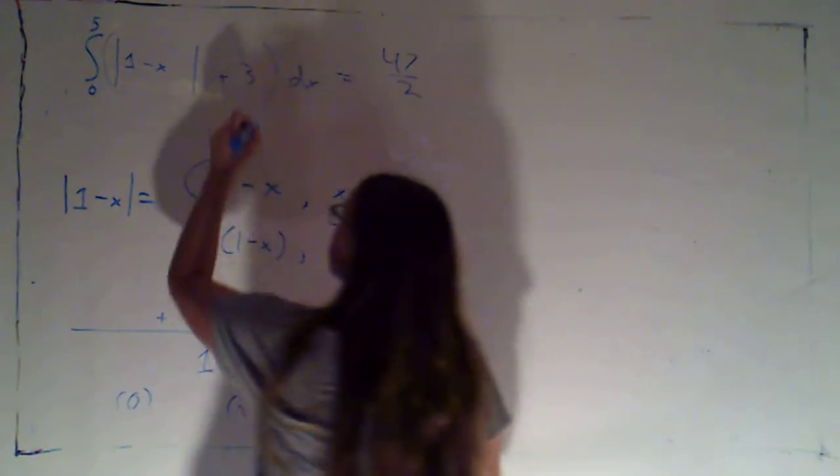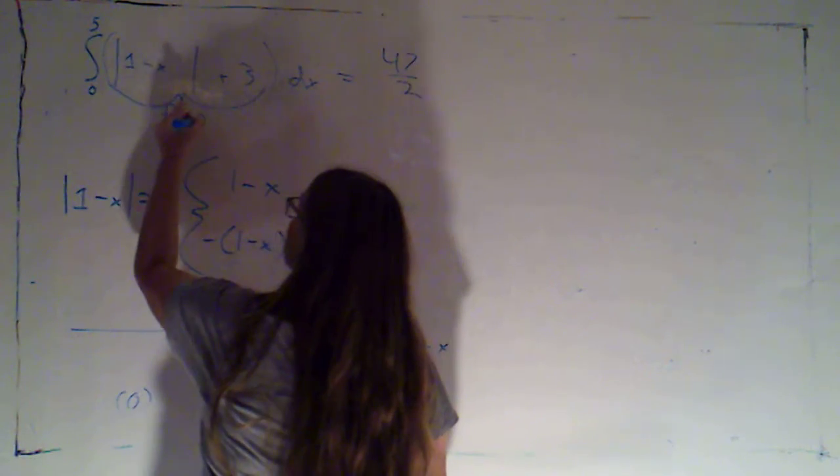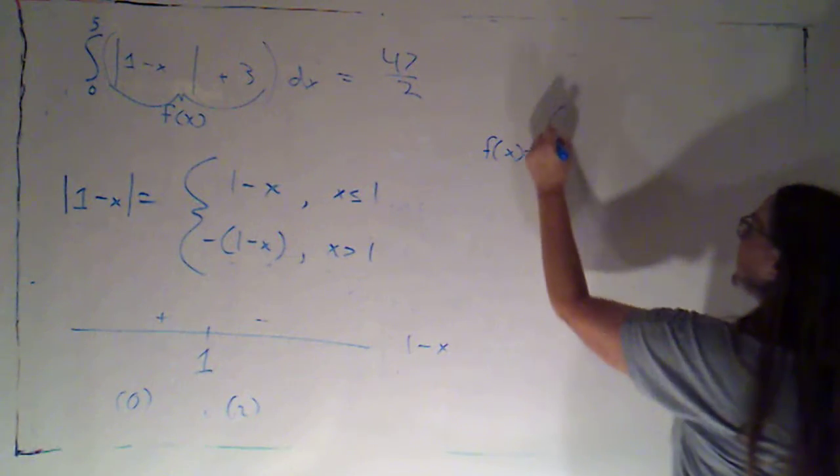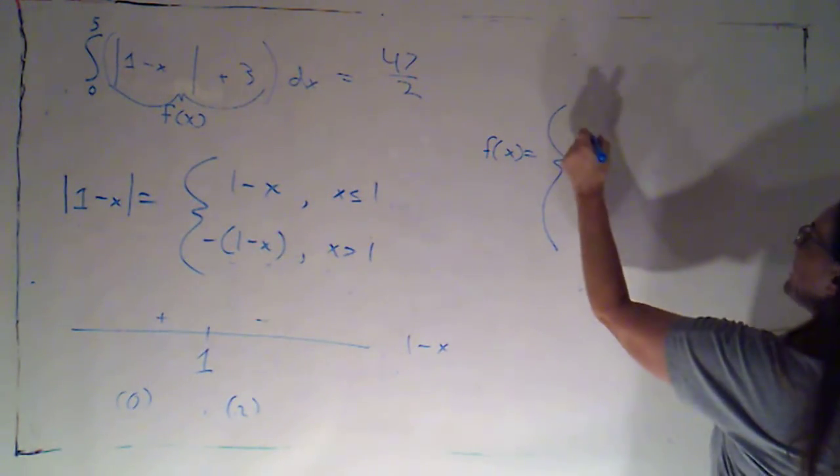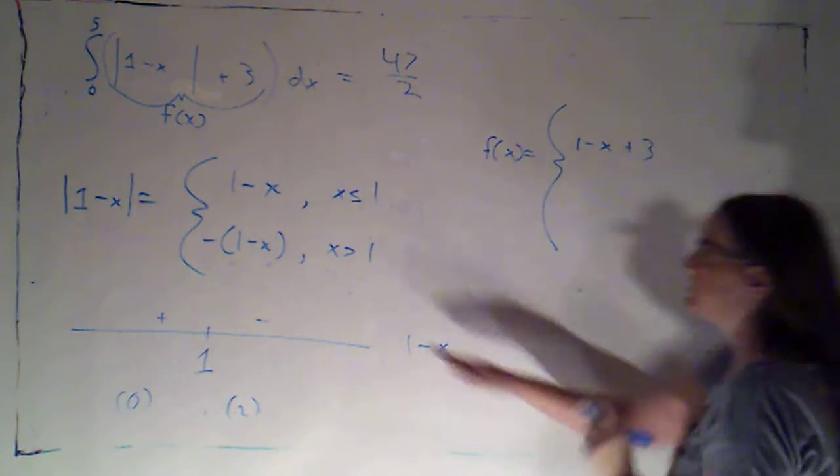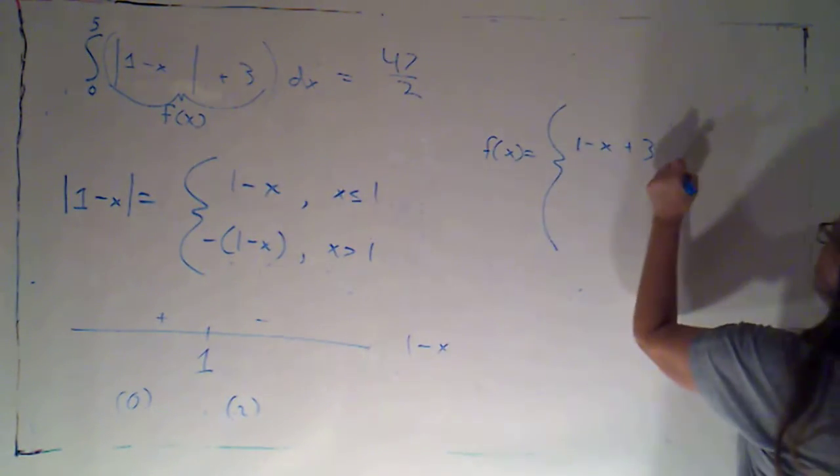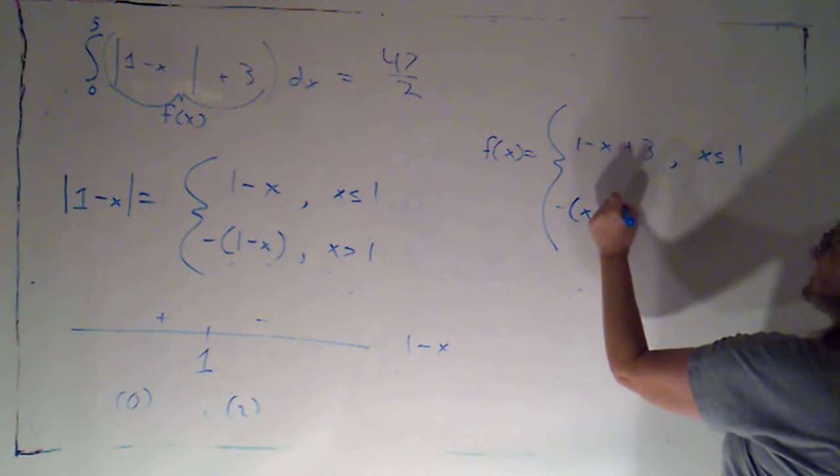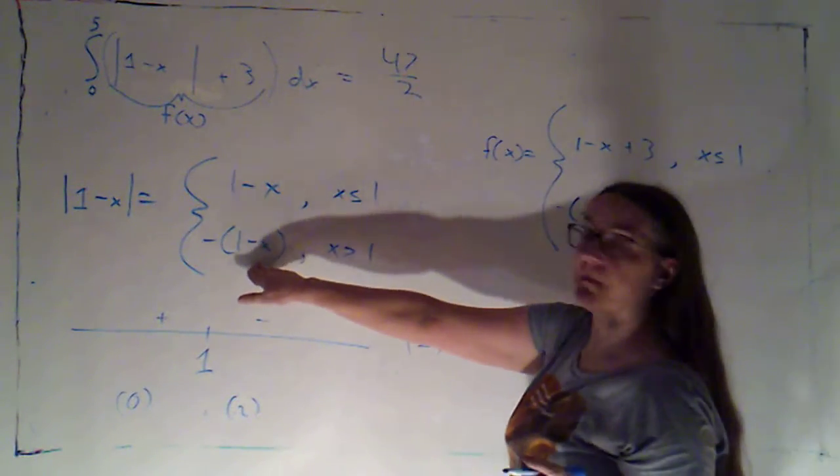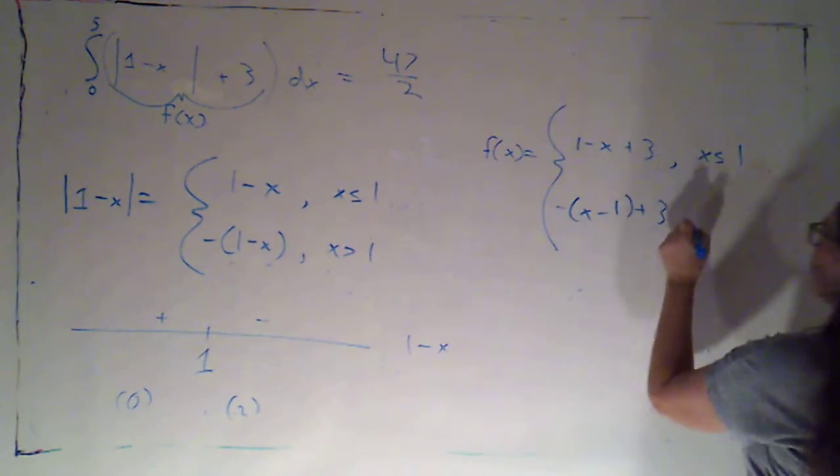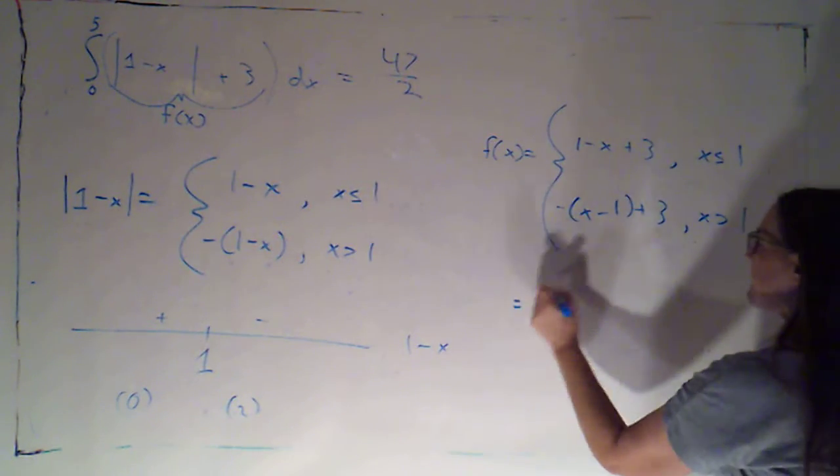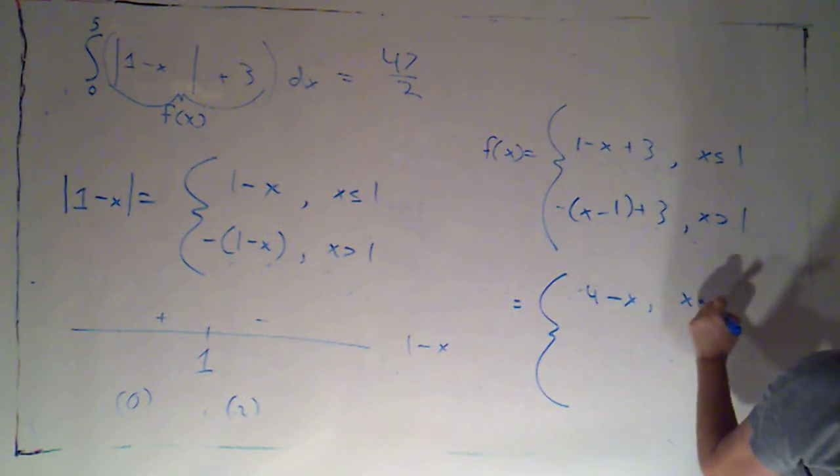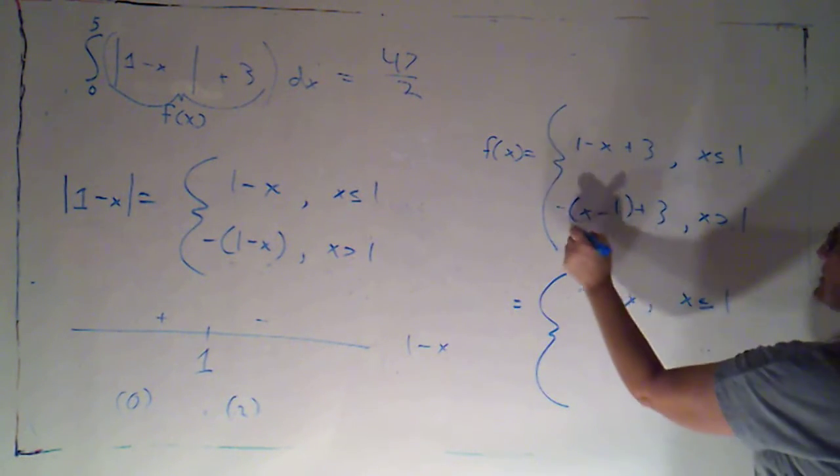Okay, now what that means is that I can write the entire integrand here piecewise. I'm going to just give it a name, I'm going to call it f of x. And now I'm able to say that f of x is going to be 1 minus x plus 3 using this rule to evaluate the absolute value, that's if x is less than or equal to 1. But it's going to be the opposite of x minus 1 plus 3 using this rule to evaluate the absolute value and that's going to be if x is bigger than 1. And then I can simplify both of these formulas. This is going to be 4 minus x if x is less than or equal to 1, this becomes a negative x.